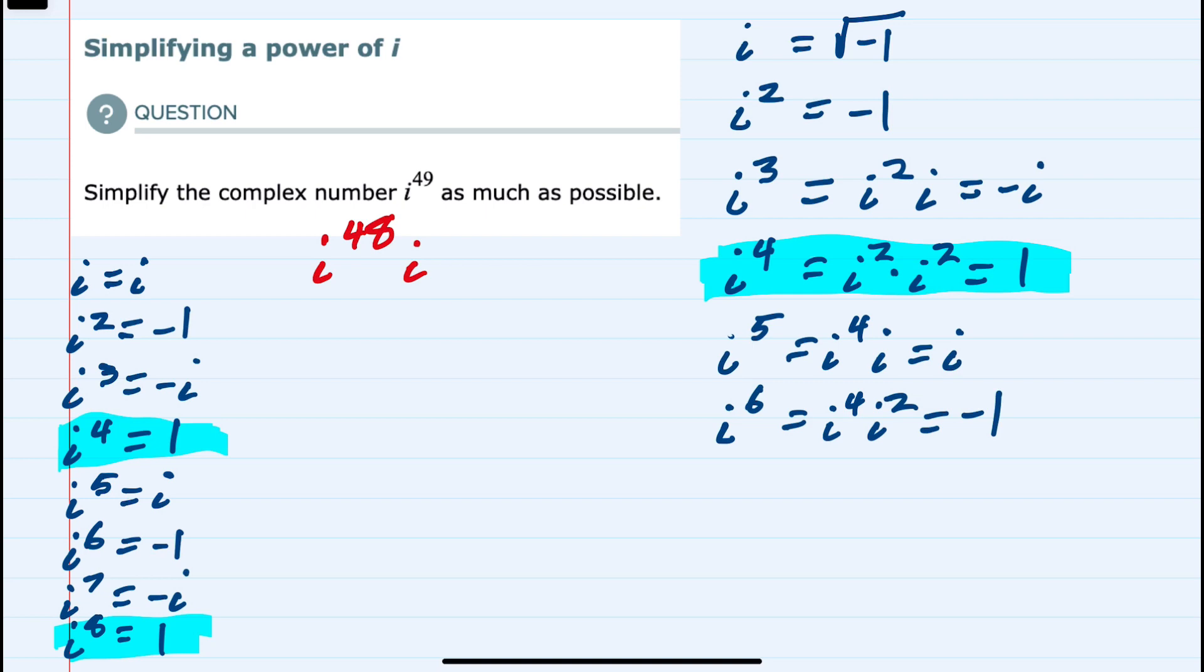And since it's a multiple of 4, this part, this i to the 48th, simplifies to being just 1. So this is 1 times i, which is just i.